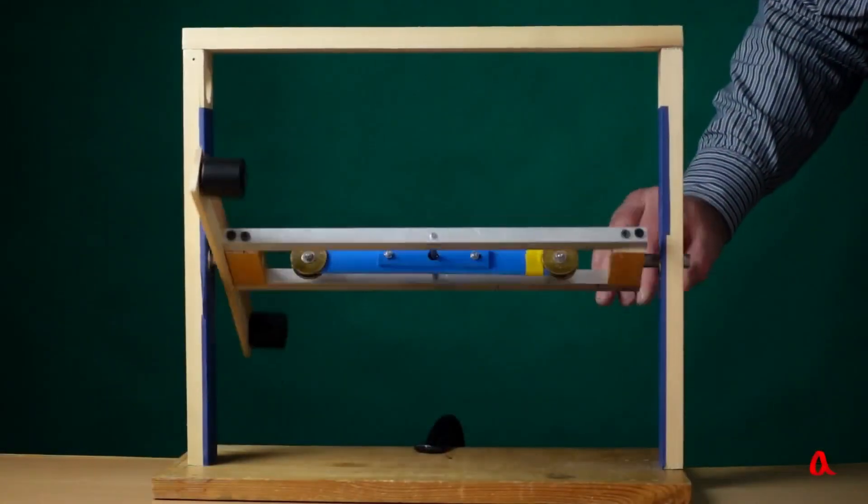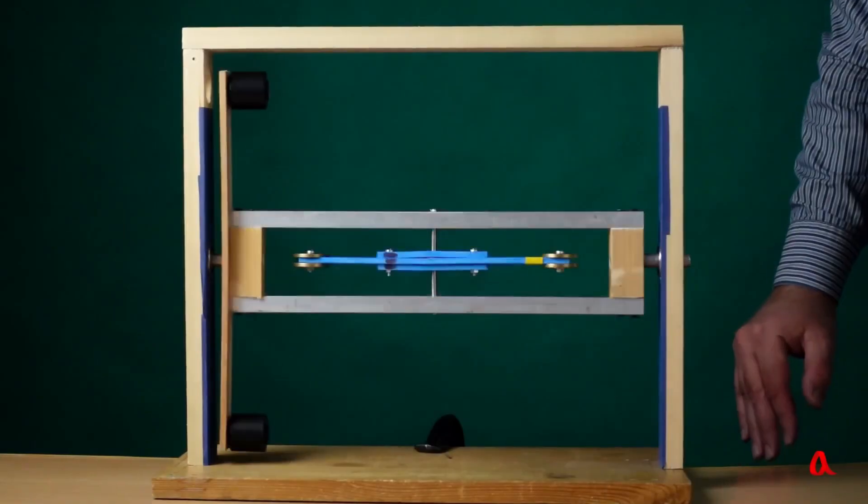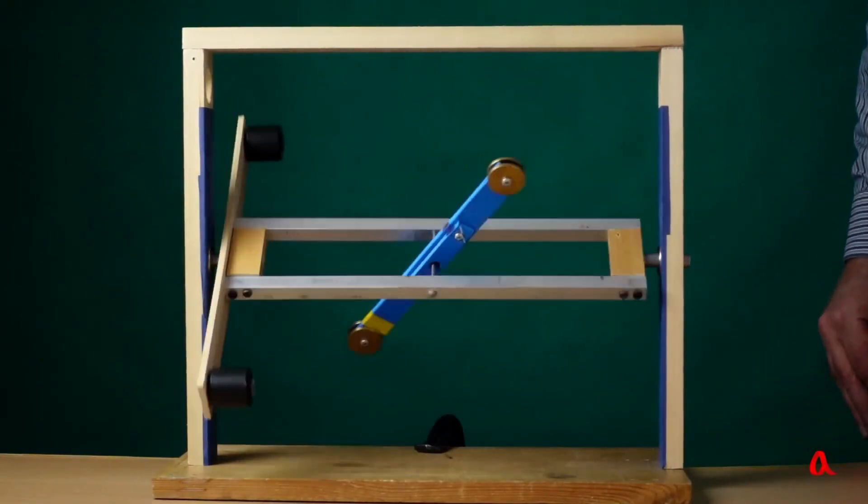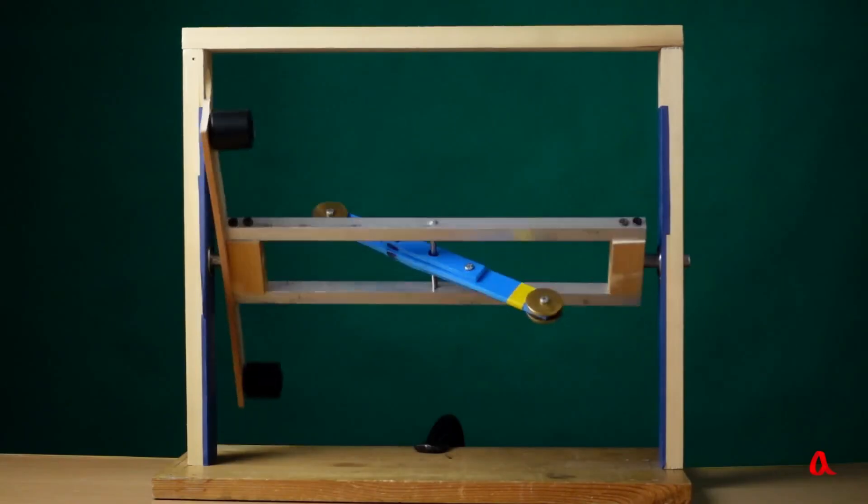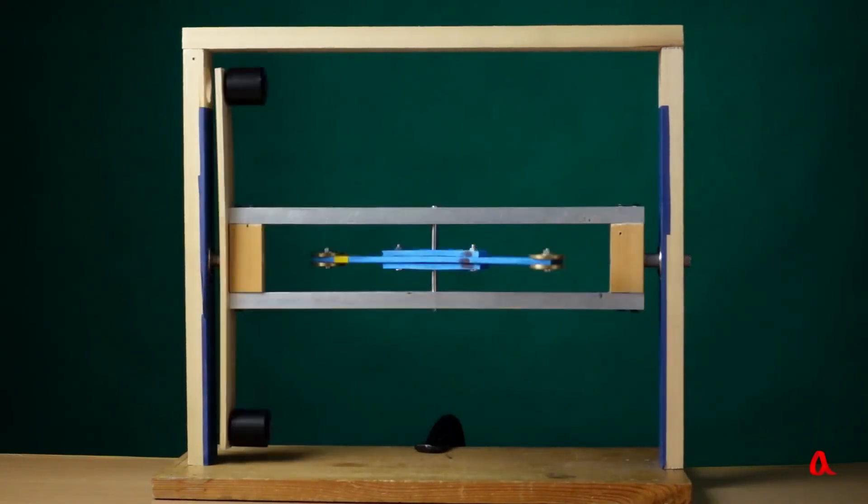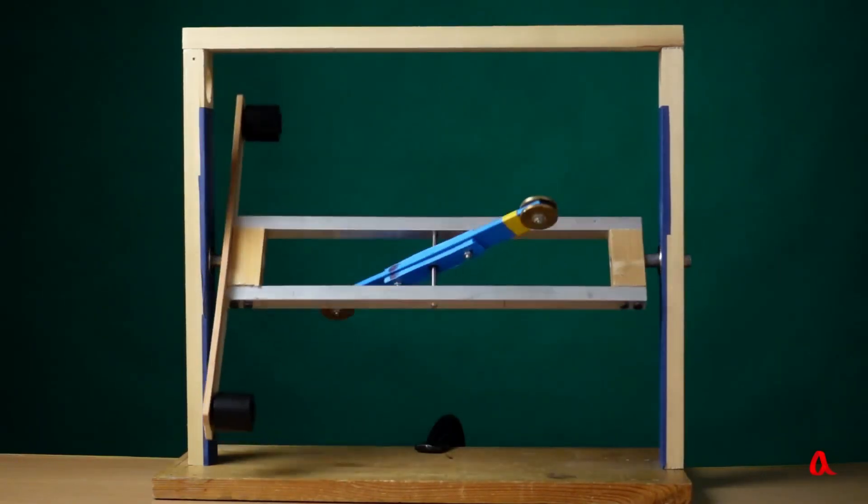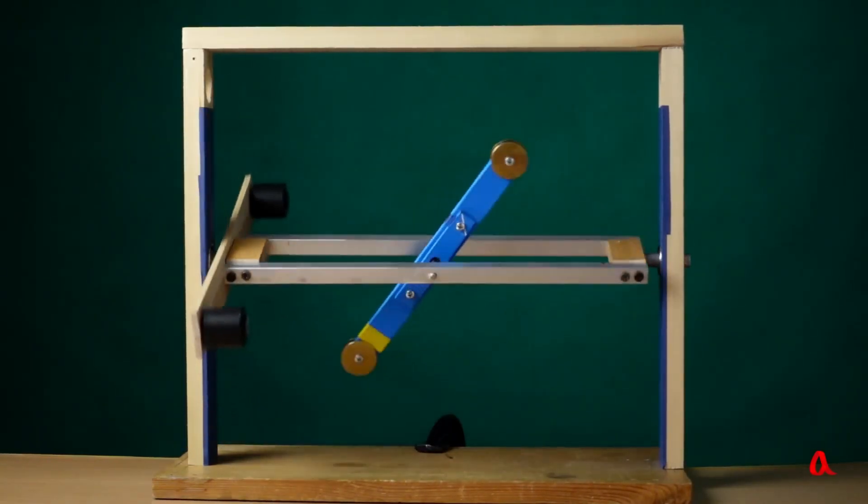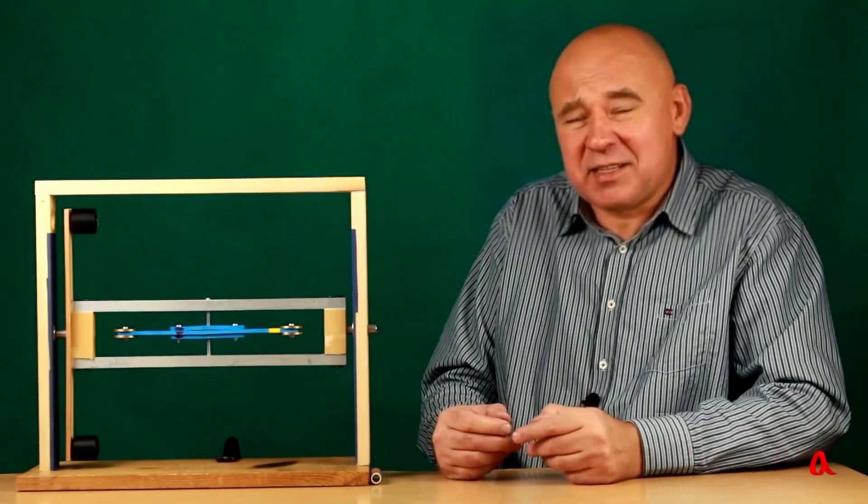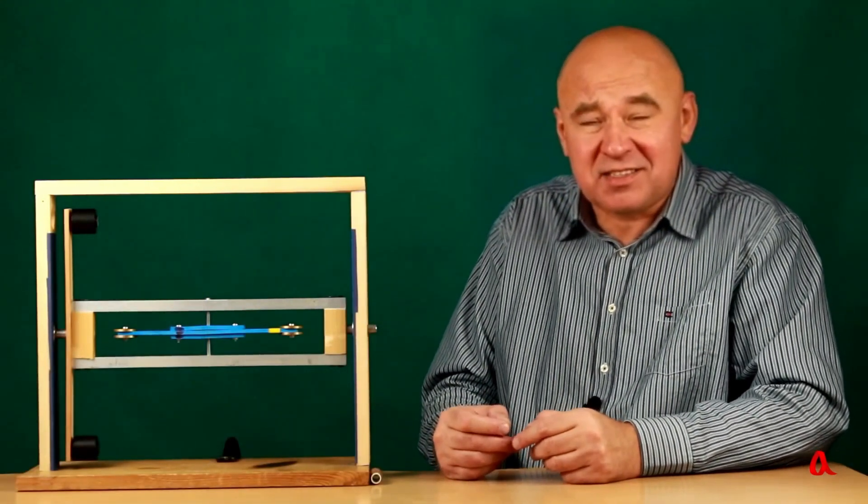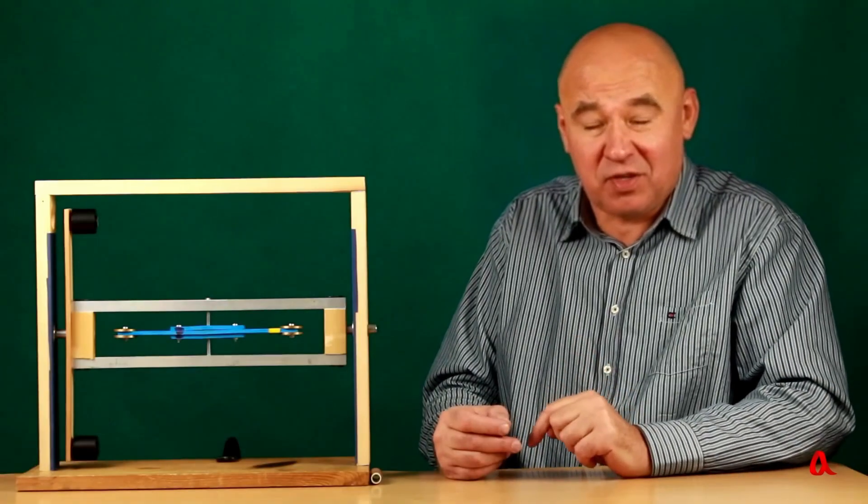The frame started spinning, and the lever almost immediately began to deviate from its axis. It swung in the opposite direction, then swung back, but the angle at which the lever approached the axis became progressively larger with each swing. Why didn't I succeed in making the lever hang along the axis of the frame for several turns?